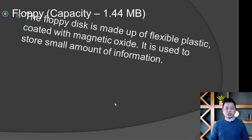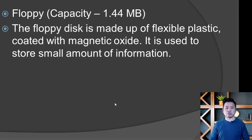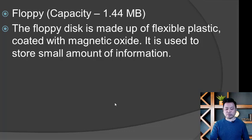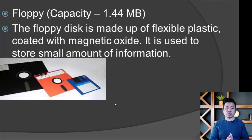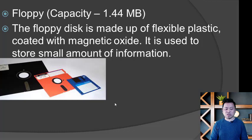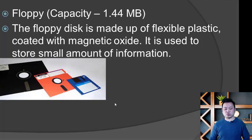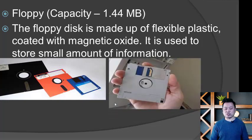The floppy disk is made of flexible plastic coated with magnetic oxide. It is used to store a small amount of information. The capacity of the floppy disk allows only a small amount of data to be stored.